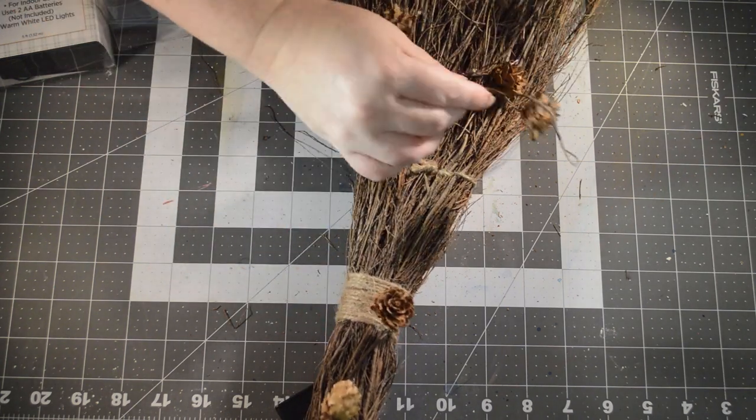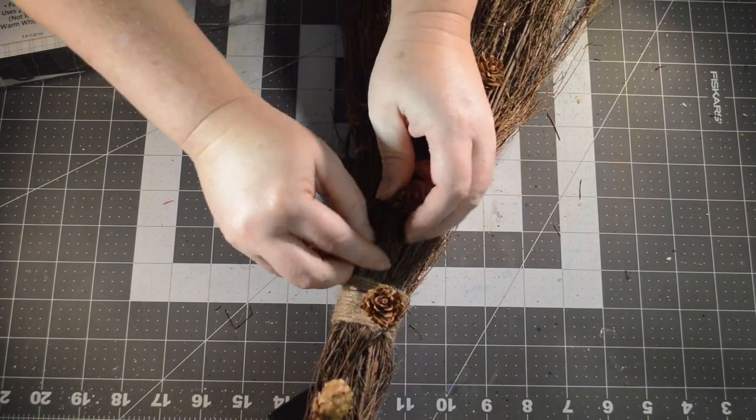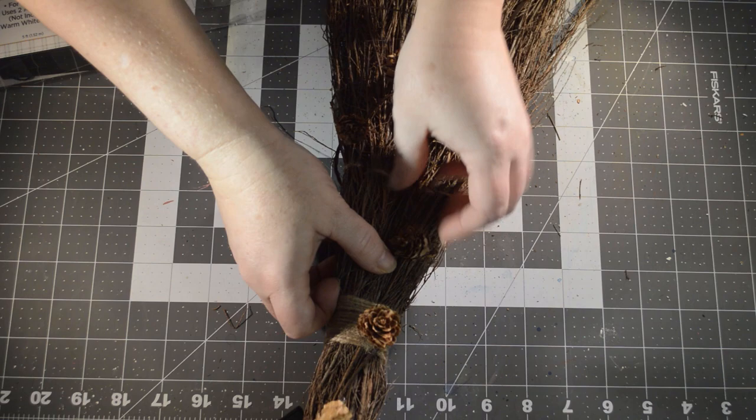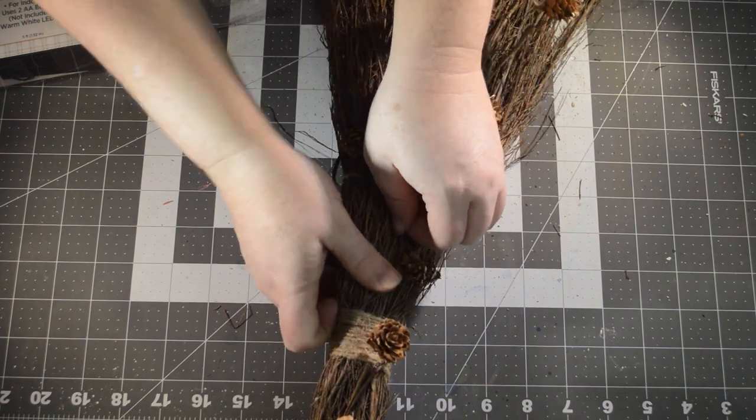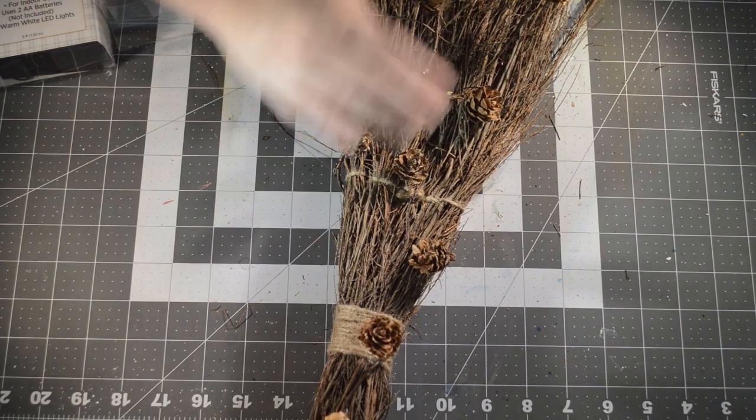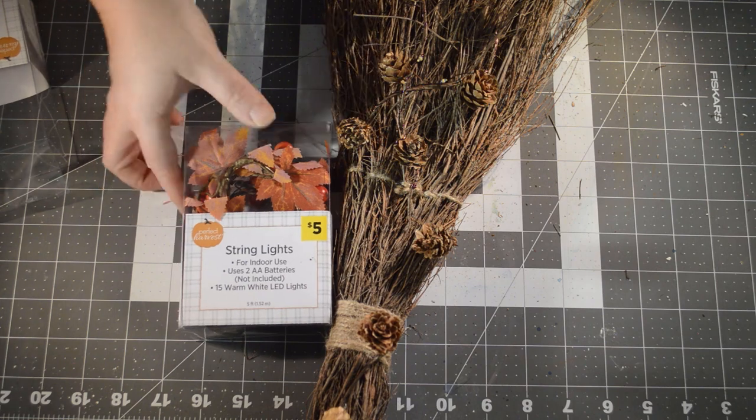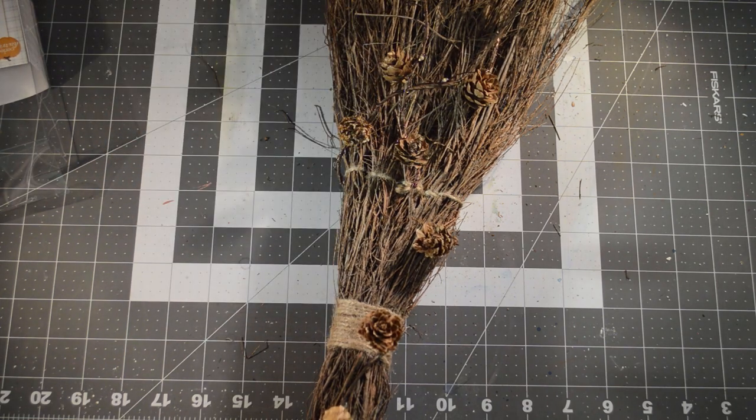Now once I get to the bottom of the broom handle here, I'm just going to arrange the pine cones in a pretty way around the broom portion of the broom, and then I'm just going to tuck the end of the string lights into the broom itself to hide the end.